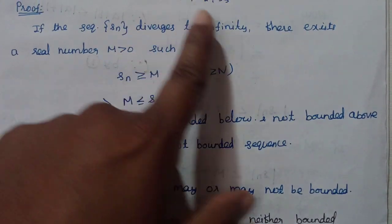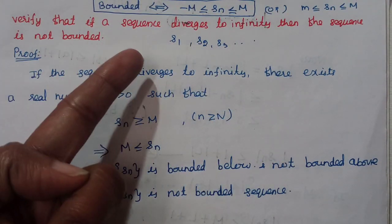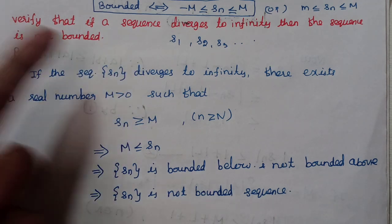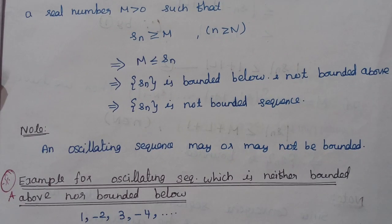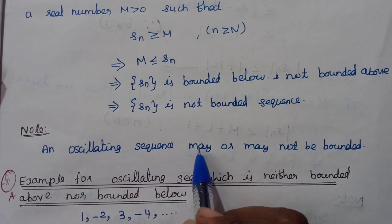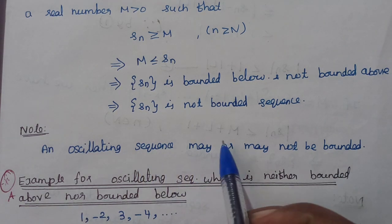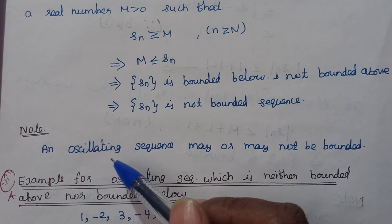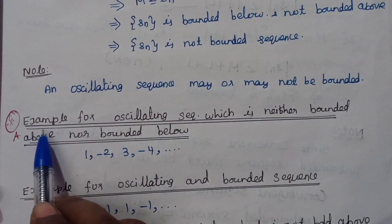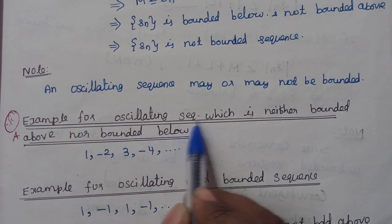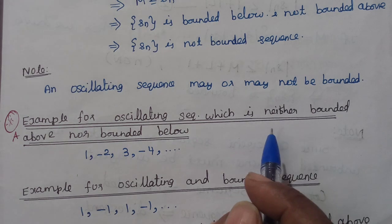Similarly, diverges to minus infinity means not bounded above — so also not bounded. An oscillating sequence may be bounded or not bounded. One question: give an example of an oscillating sequence which is neither bounded above nor bounded below.